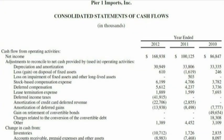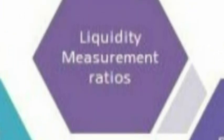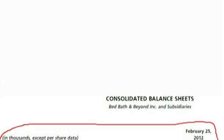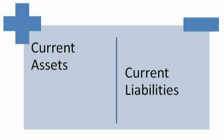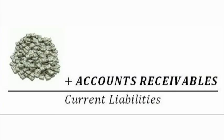So let's jump right into this. The first set of ratios we're going to cover are known as liquidity measurement ratios. These ratios attempt to measure a company's ability to pay off its short-term debt obligations if they were to come due, by comparing a company's most liquid assets to its short-term liabilities. The liquidity ratios we'll cover are the current ratio, the quick ratio, the cash ratio, and the cash conversion cycle. The biggest difference among these ratios is the types of assets used, with some being more conservative than others.